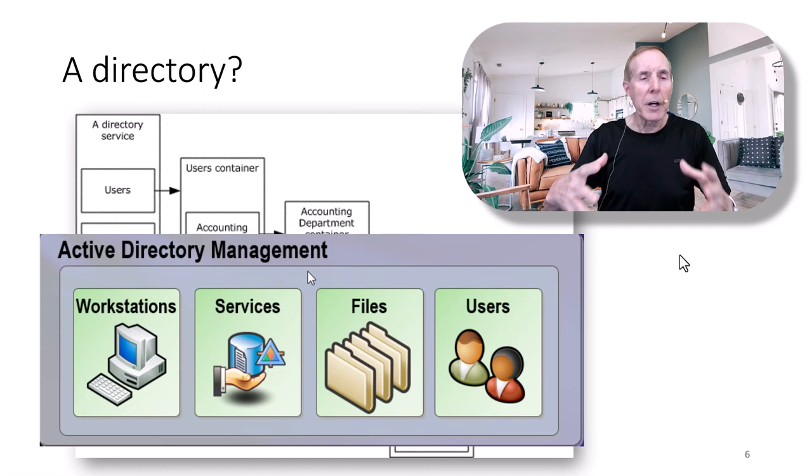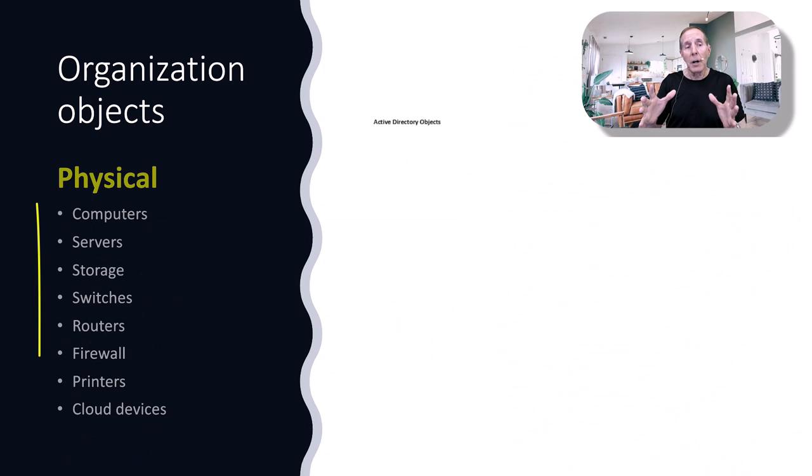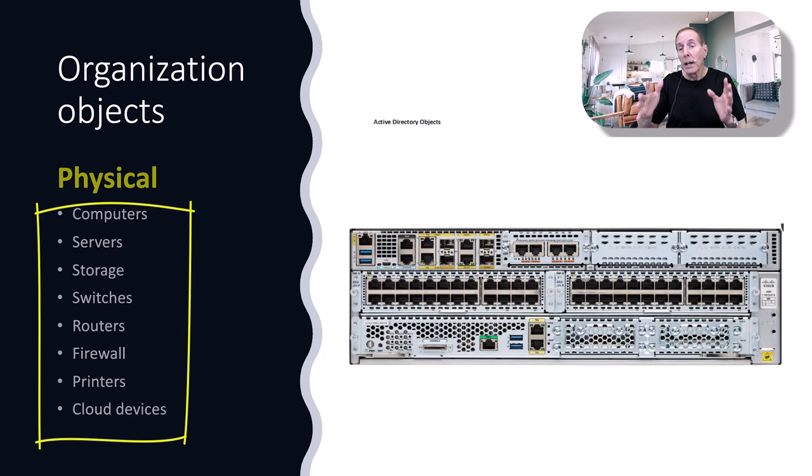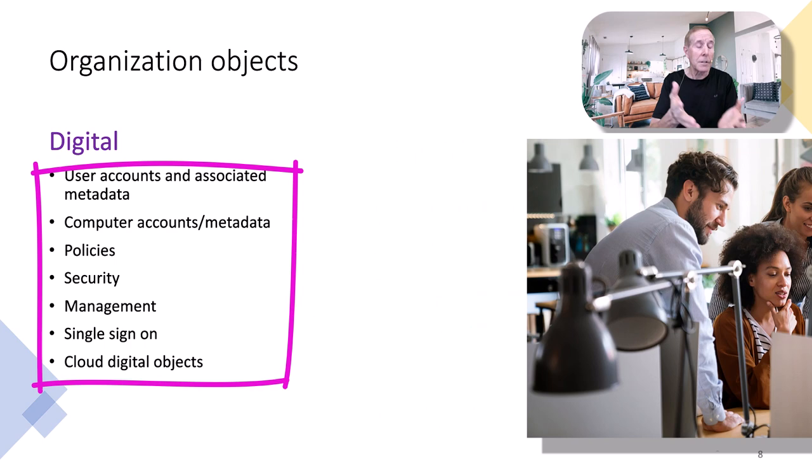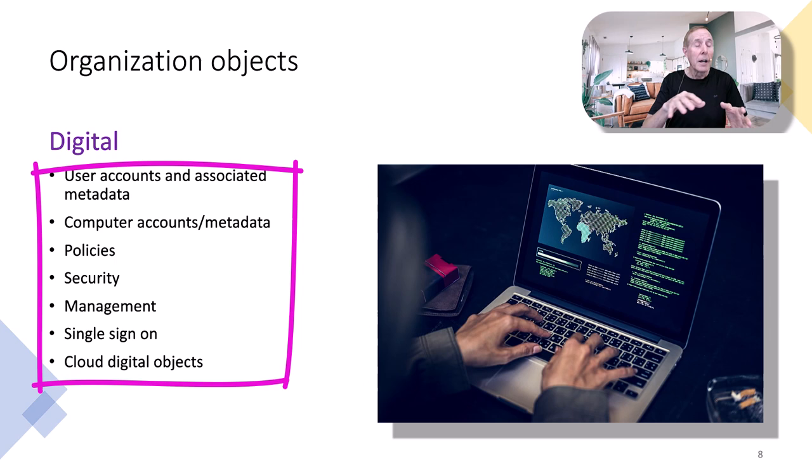In an organization you've got a lot of physical objects: computers, servers, storage, switches, routers, firewalls, printers, and cloud devices. And you also have a lot of digital objects — things you can't touch: user accounts and associated metadata, computer accounts and associated metadata, policy, security, single sign-on, and cloud digital objects.